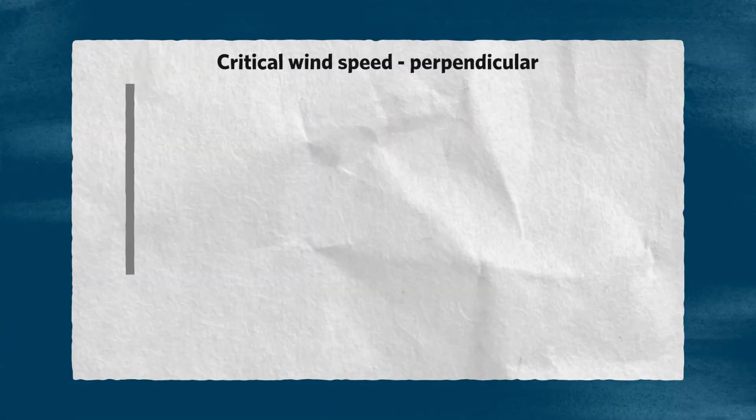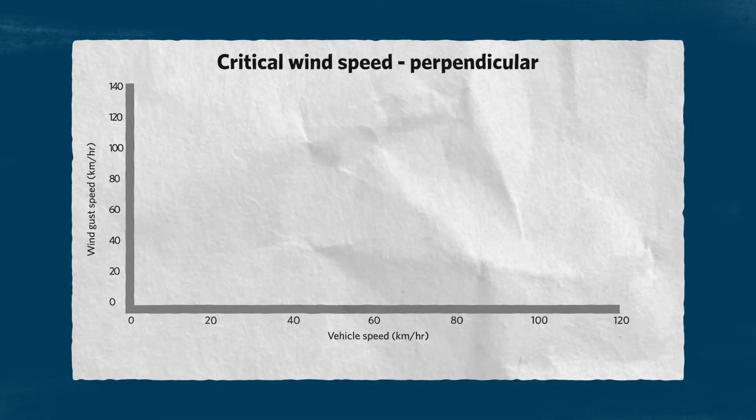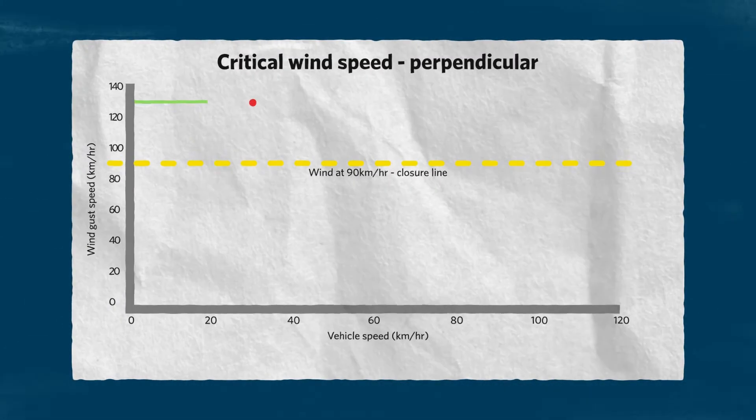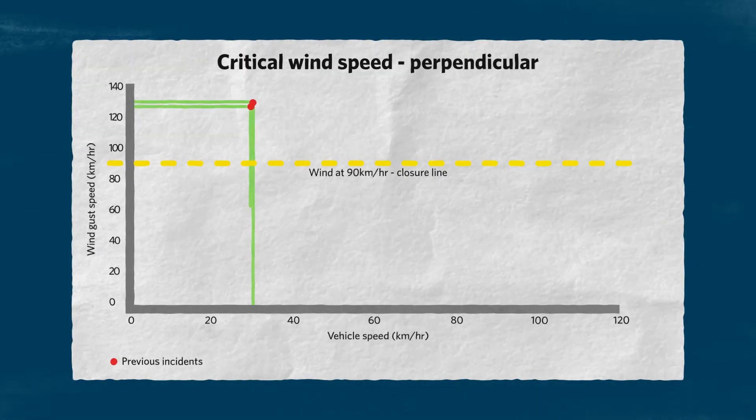The point where the risk to the public and the bridge becomes likely is known as the critical wind speed. When wind speed or gusts exceed 90 kilometres an hour, we will close the bridge.